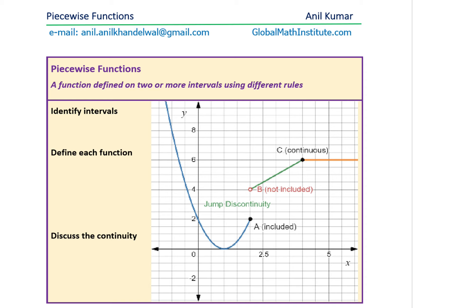Here on the graph you can see there is a parabola, an increasing line, and a horizontal line — these are the three different pieces of a function given to us. The question is how do we identify the interval for each? We have three different pieces: this parabola, the second one is a slanting line, and the third one is the horizontal line.